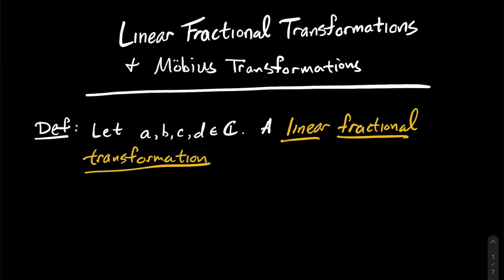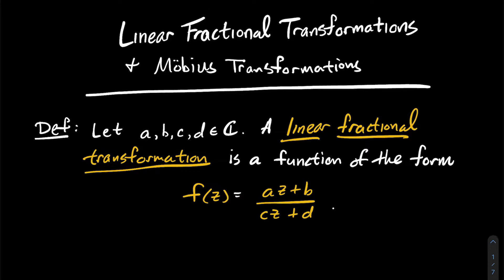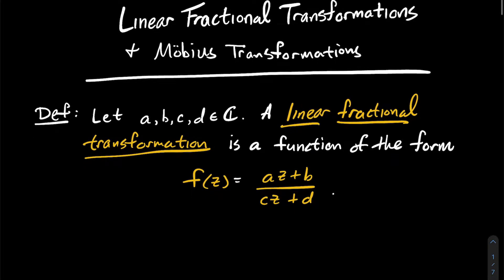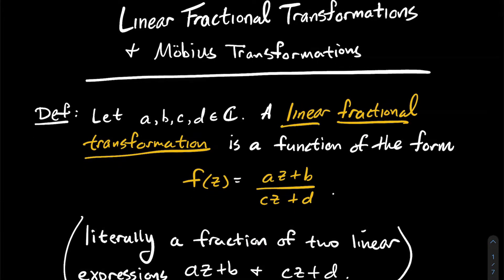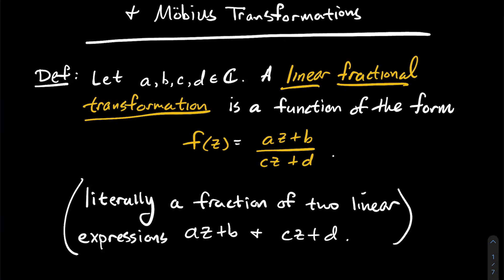If I let a, b, c, and d be complex numbers, a linear fractional transformation is a complex function of the form f(z) = (az + b) / (cz + d). So a linear fractional transformation is literally a fraction of two linear expressions, az + b and cz + d.